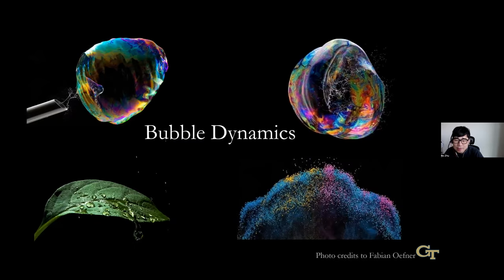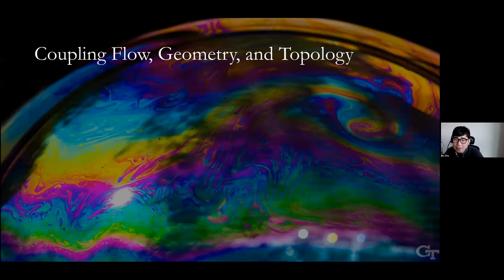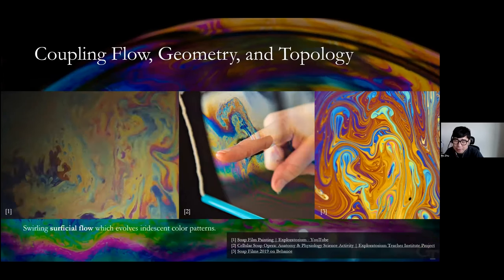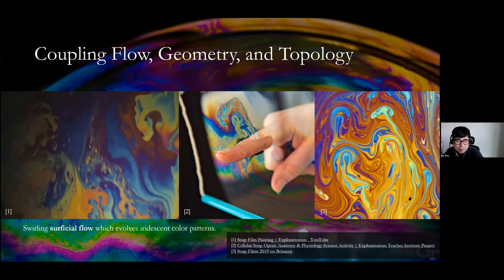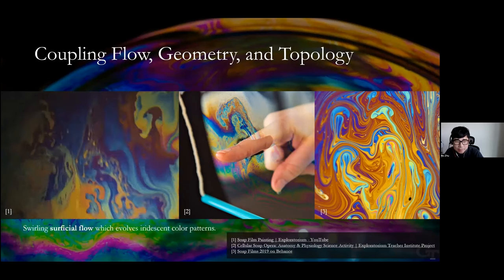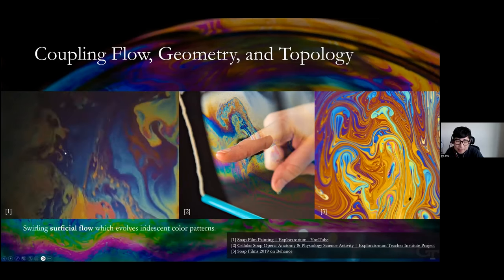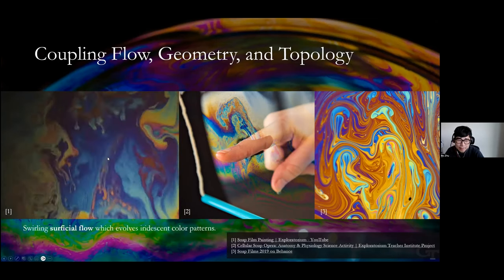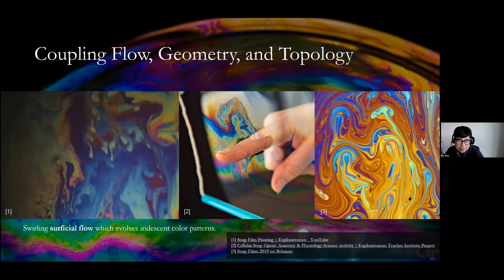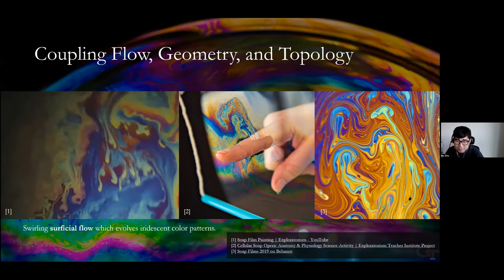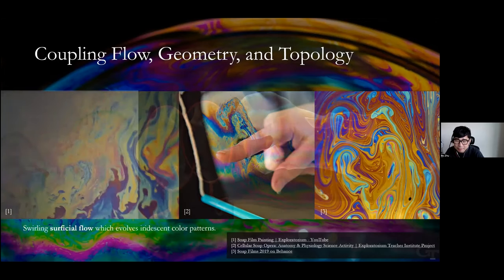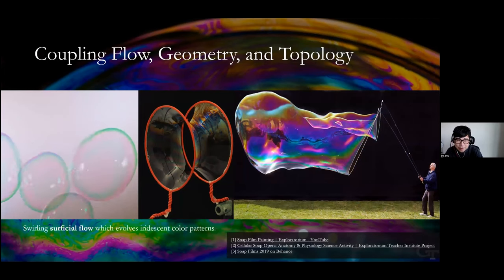The first simulation problem I want to talk about is bubble dynamics — simulating very thin soap bubbles and their color, shape, and topological evolution. If we look at soap bubbles in the real world, there are a few key things: first, the flow on a thin film is very turbulent, with extreme levels of detail. These bubbles deform; the shape is not constant and not even volumetric. Everything happens on a very thin film that can drastically oscillate and interact with the aerodynamic environment.